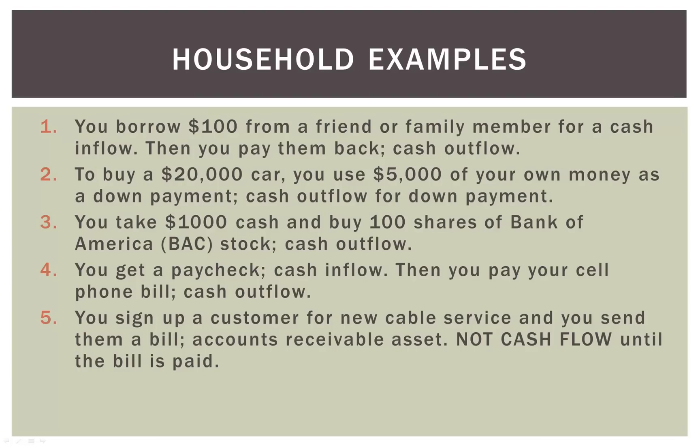Number two: let's say you buy a $20,000 car and use $5,000 of your own money as a down payment — that's a cash outflow of $5,000. After that you'll have more cash outflows for car payments, gas, maintenance, and things like that. Number three: you take $1,000 cash and buy 100 shares of Bank of America stock at around $10. You have a cash outflow of $1,000. Even though you get 100 shares of stock in return, for cash flow purposes we're just worried about the $1,000 cash that leaves your bank account.